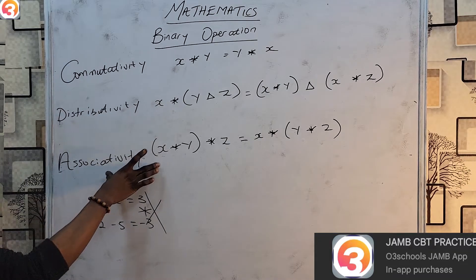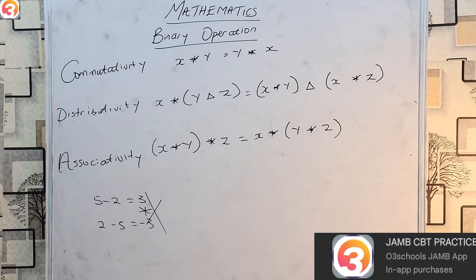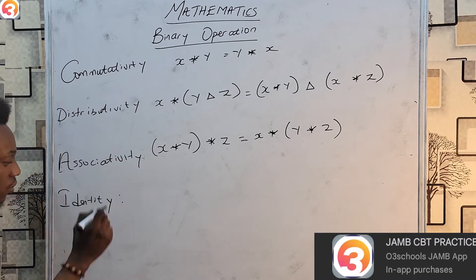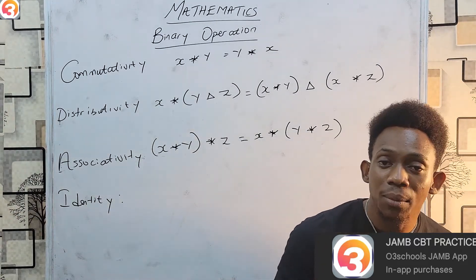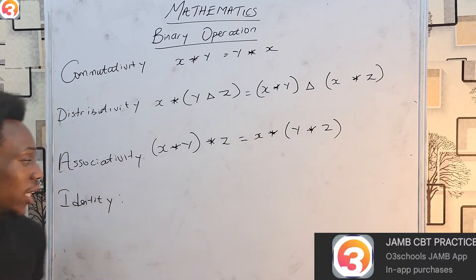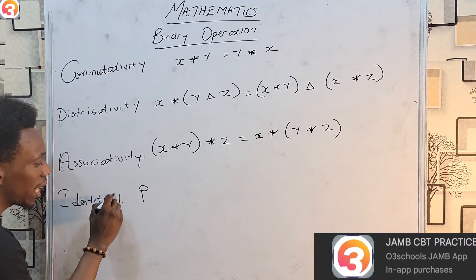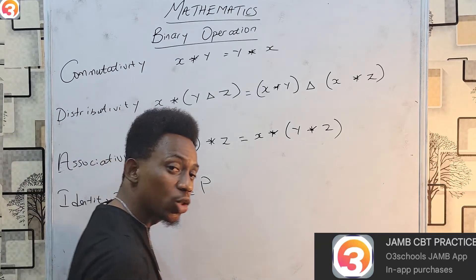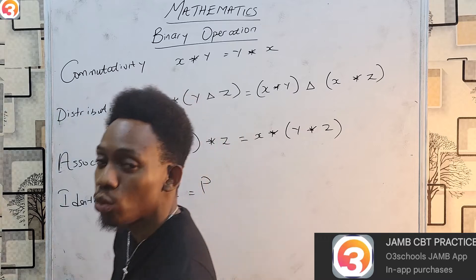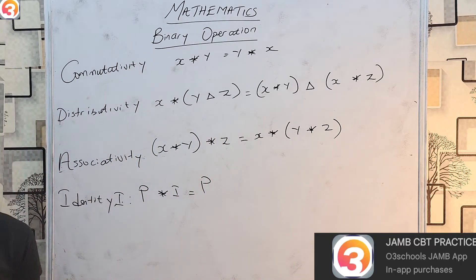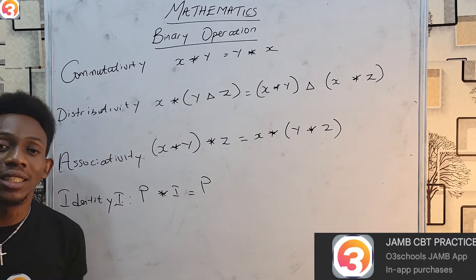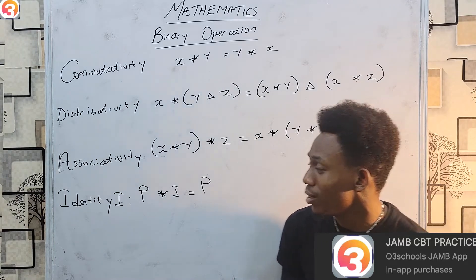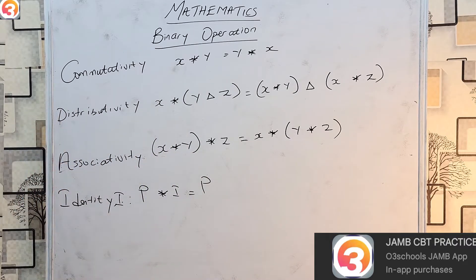Please learn these three properties because you will often be asked about them. There is also a special property of every operation known as the identity element. The identity element is simply that element which when you operate on it, you get yourself back. If p operates on identity element i, you should get p. For example, in multiplication, 5 × 1 = 5, so the identity for multiplication is 1. In addition, the identity is 0, because 8 + 0 = 8.